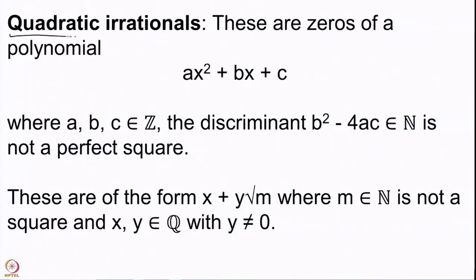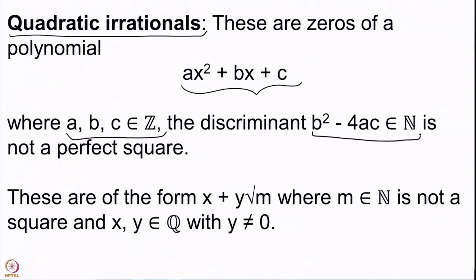We have the quadratic irrationals which are the roots of ax² + bx + c with a, b, c being integers. The discriminant is a non-square positive integer, and we also note that these have to be of the form x + y√m. These are the quadratic irrationals; we want to write them in terms of continued fraction expansions which keep repeating after a while.